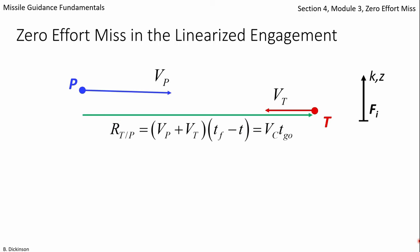Here's a linearized engagement, where the pursuer and target are on a nearly head-on collision, and the range vector is the closing velocity multiplied by time to go.